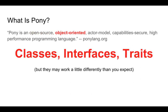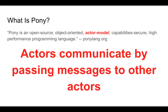Pony is an object-oriented language — it has classes, interfaces, and traits, which are things you're probably used to from other OO languages, though in Pony they may work a little differently. It uses the actor model: actors communicate by passing messages to other actors. You may be familiar with this from languages like Erlang or systems like Akka. Basically actors run independently and pass messages back and forth to communicate.